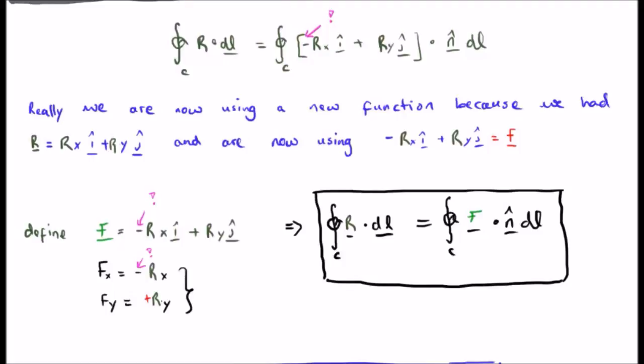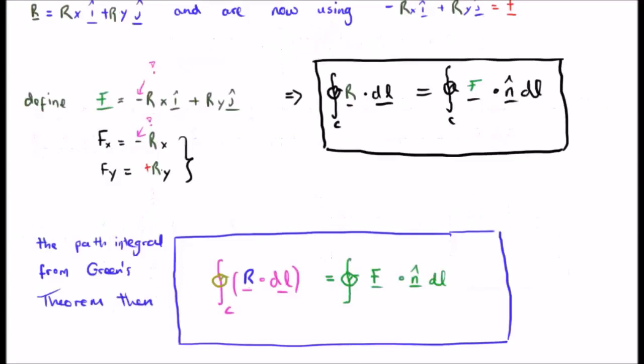Let's remind ourselves what the path integral from Green's theorem was. The closed line integral of r·dl is the closed line integral of f dot n-hat dl.